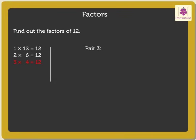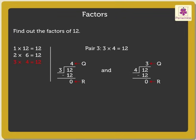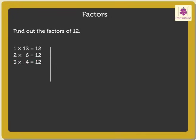Pair 3: 3 into 4 is equal to 12. Here, if we divide 12 by 3, we get the quotient as 4. And if we divide 12 by 4, we get the quotient as 3. Here also, we get the remainder as 0 in both the divisions. Thus, it means that 12 is divisible by 3 and 4. Thus, we now understand that 12 is divisible by 1, 2, 3, 4, 6 and 12.